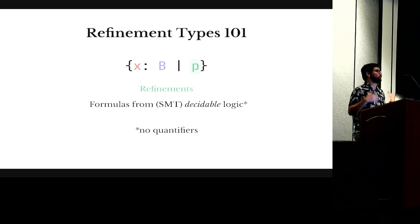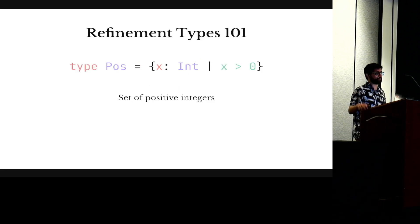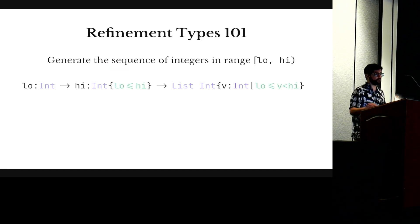And a consequence of that is that we don't have quantifiers. We do this to have type checking decidable, but also predictable. And I'm going to come back to this restriction of not having quantifiers later in the talk. This is a very simple example. We can define the type of positive numbers by restricting integers to those that are greater than zero.